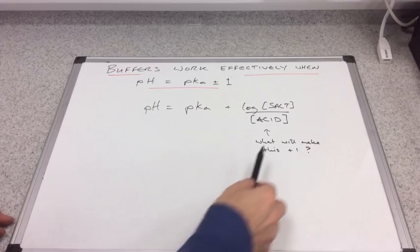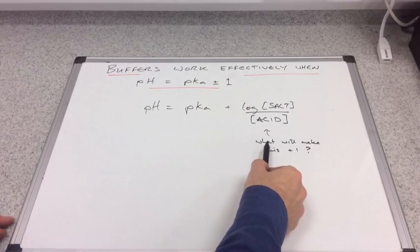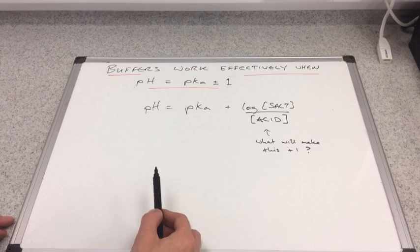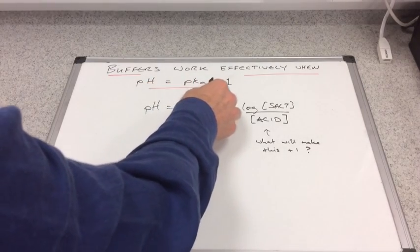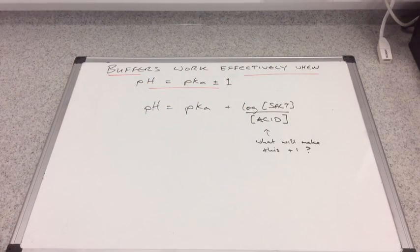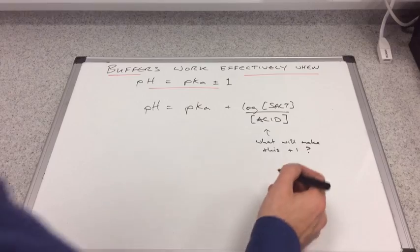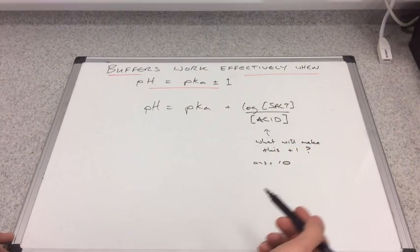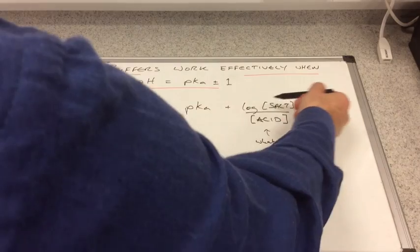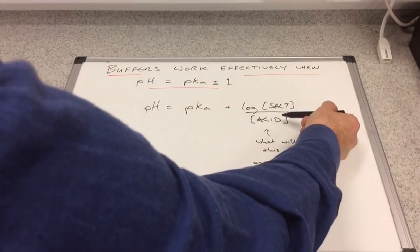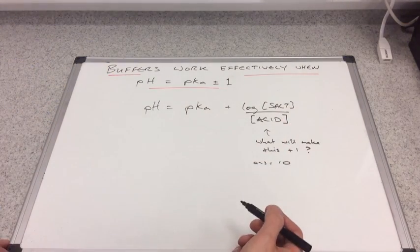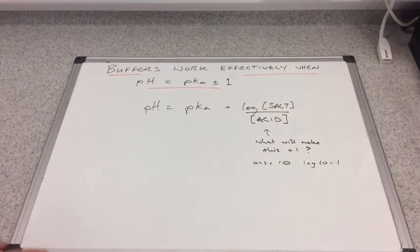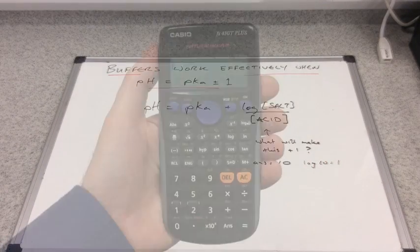We've got the Henderson-Hasselbalch equation up now and we're asking ourselves what's going to make this term equal to plus one so we'll end up with pH equals pKa plus one. Well it's actually 10, so the answer equals 10. If we can get log of 10 here then the log of 10 is 1.